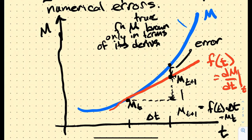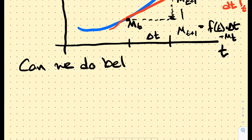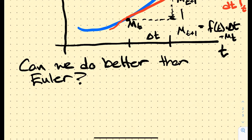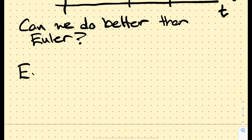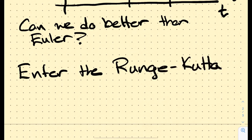The question is: can we do better than this Euler approximation? And the answer is yes. I'm not going to show mathematically how much better, but I'll show what we're going to do in terms of this approximation. Enter one of my favorite words in all of math — the Runge-Kutta fourth-order scheme. It turns out Runge and Kutta were actually two different people.